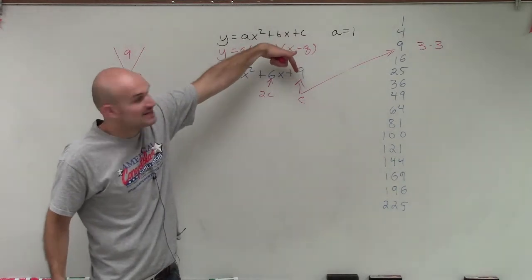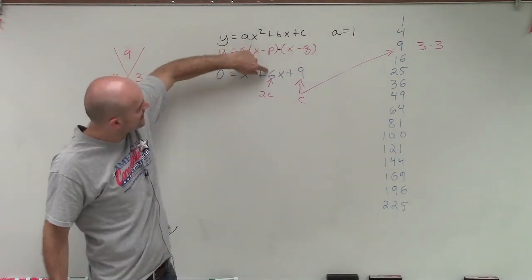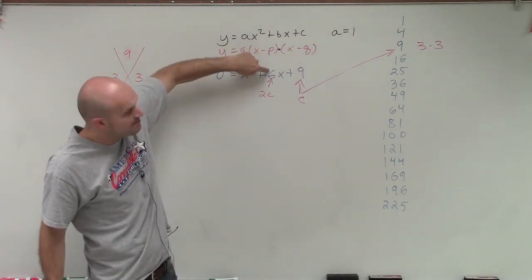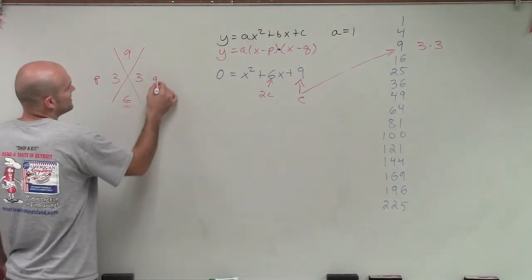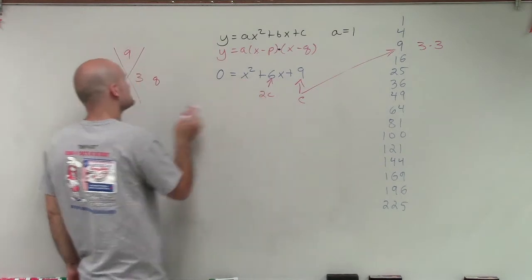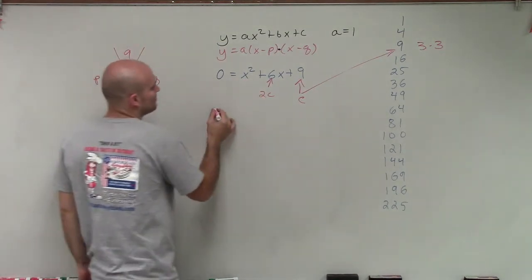So since my last number, c, is a perfect square, and then 3, or my b is double 3, then those are going to be my p and my q. And since this is positive, both p and q must be positive as well.